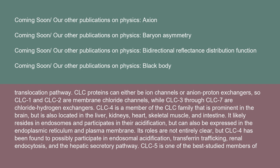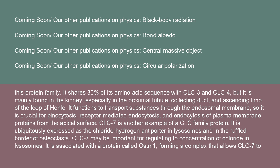CLC-4 is prominent in the brain but also located in the liver, kidneys, heart, skeletal muscle, and intestine. It likely resides in endosomes and participates in their acidification, with possible roles in endosomal acidification, transferrin trafficking, renal endocytosis, and a hepatic secretory pathway. CLC-5, one of the best-studied members, shares 80% of its amino acid sequence with CLC-3 and CLC-4 but is mainly found in the kidney — especially in the proximal tubule, collecting duct, and ascending limb of the loop of Henle — functioning in endosomal membrane transport and crucial for pinocytosis, receptor-mediated endocytosis, and endocytosis of plasma membrane proteins from the apical surface.